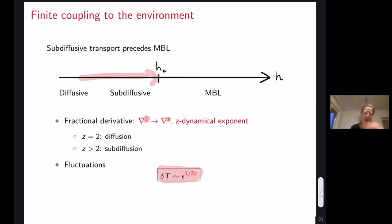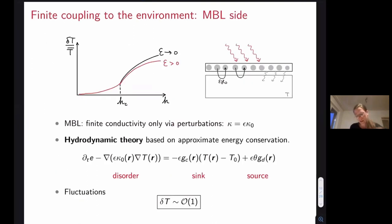Just kind of repeat the derivation, and in that case what we get is that this variation of temperature profile will depend on the dynamical exponent in that sense. That's a very good sign because it means that as we will be tuning the coupling strength to the environment and look at the variation of temperatures, we will be able to infer what is actually happening with transport, with the dynamical exponent.